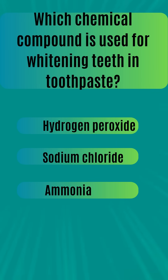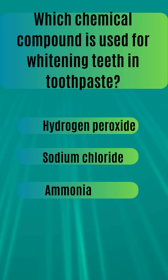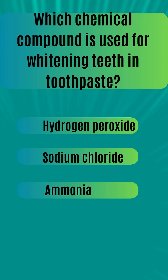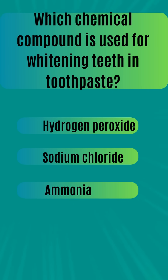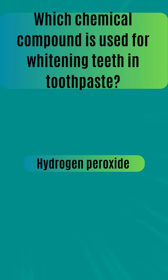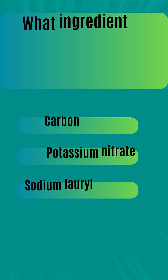Which chemical compound is used for whitening teeth in toothpaste? Hydrogen peroxide, sodium chloride, ammonia. The answer is hydrogen peroxide.